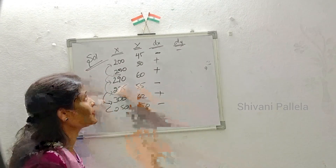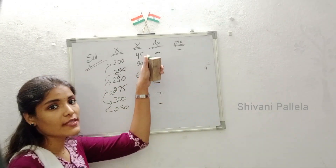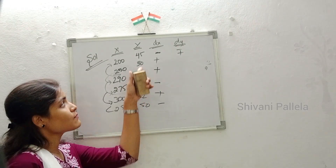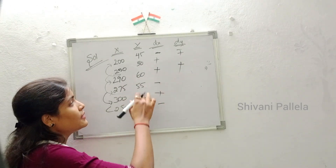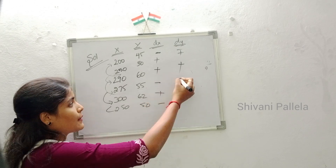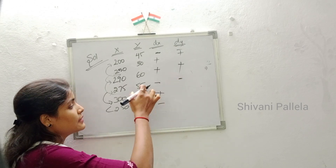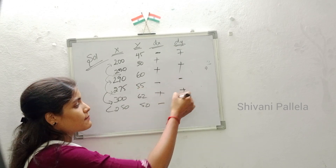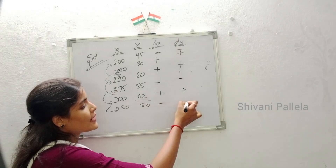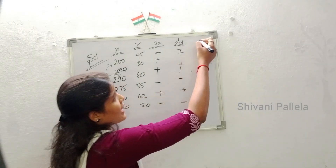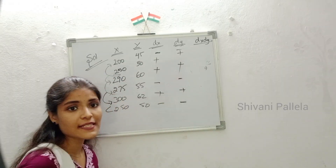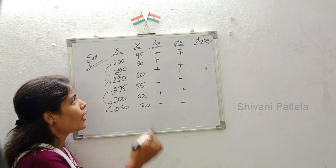Now calculating dy: first value gets a hyphen. 50 is more than 45, so plus. 60 is more than 50, so plus. 55 is less than 60, so minus. 62 is more than 55, so plus. 50 is less than 62, so minus. The dy column is complete.